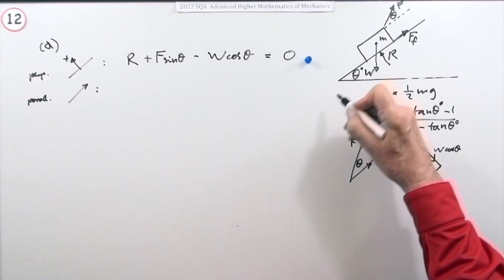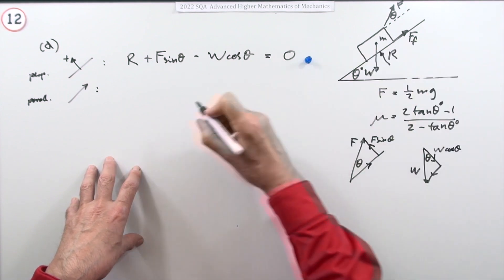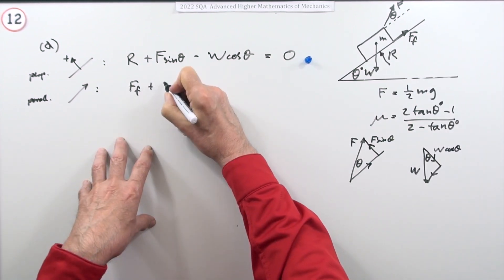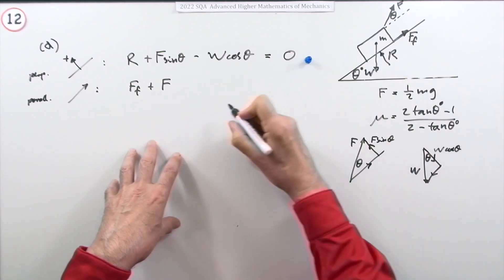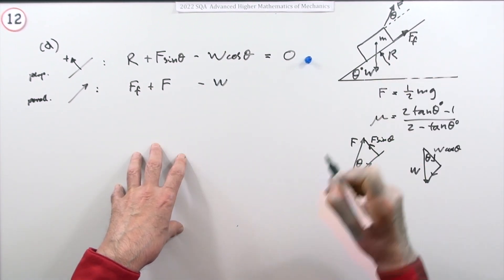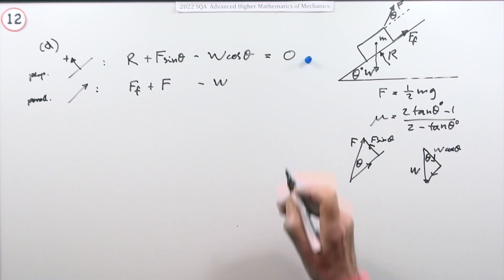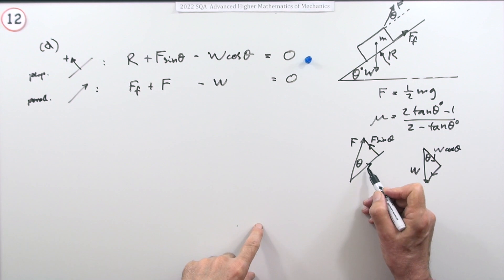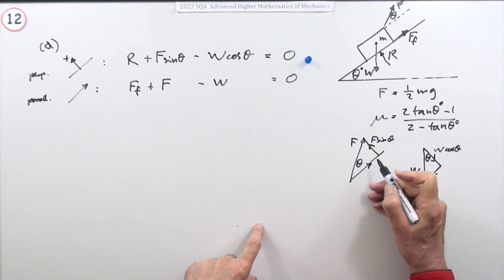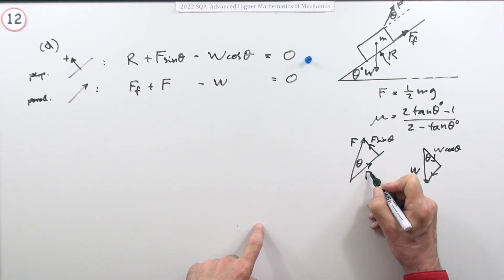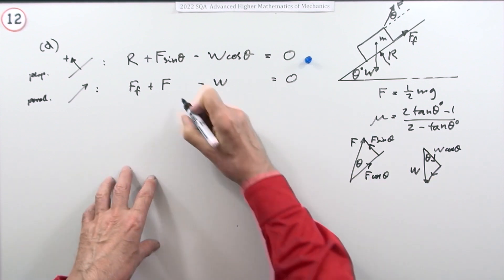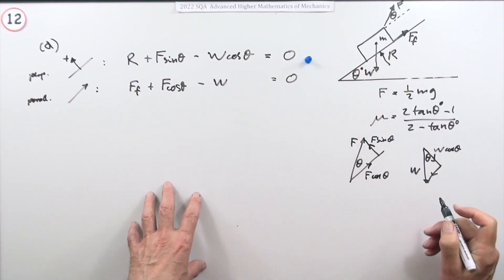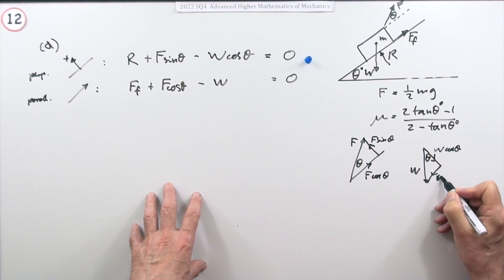Now taking components parallel to the slope: we have the friction force, a component of F up the slope, and a component of W opposing it, and their sum equals zero. The components switch — this time it's cosine for F and sine for W — they have to switch because they can't both be the same. So parallel: F cosθ + friction − W sinθ = 0.